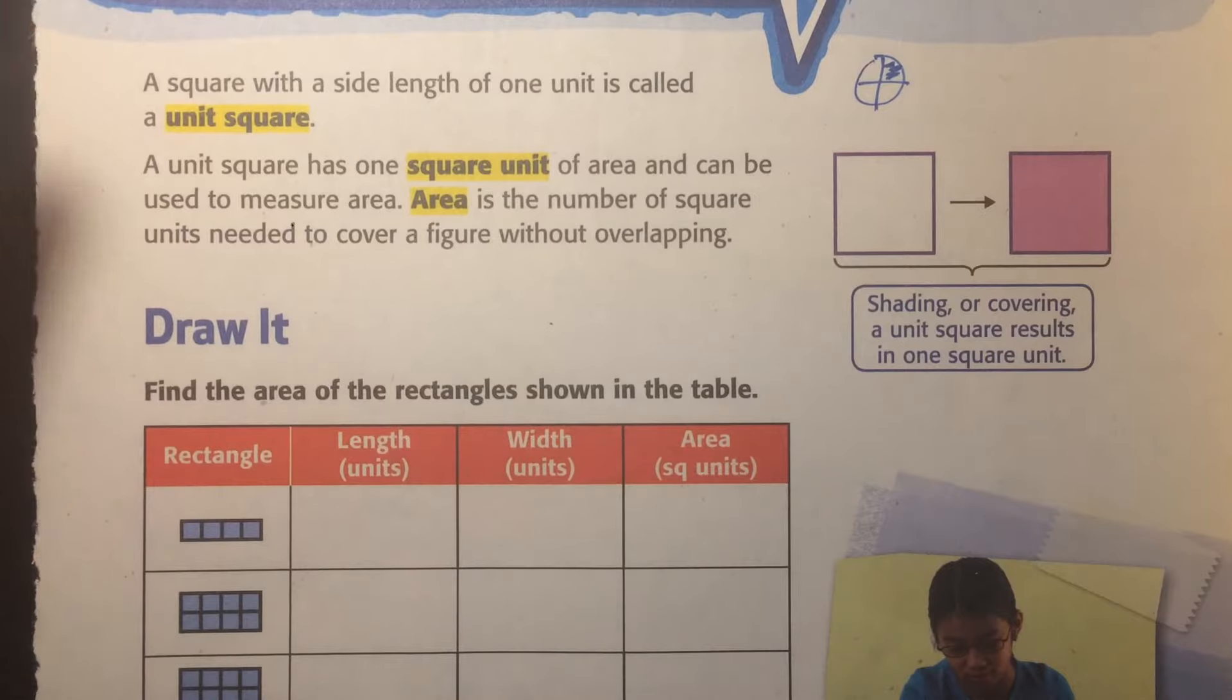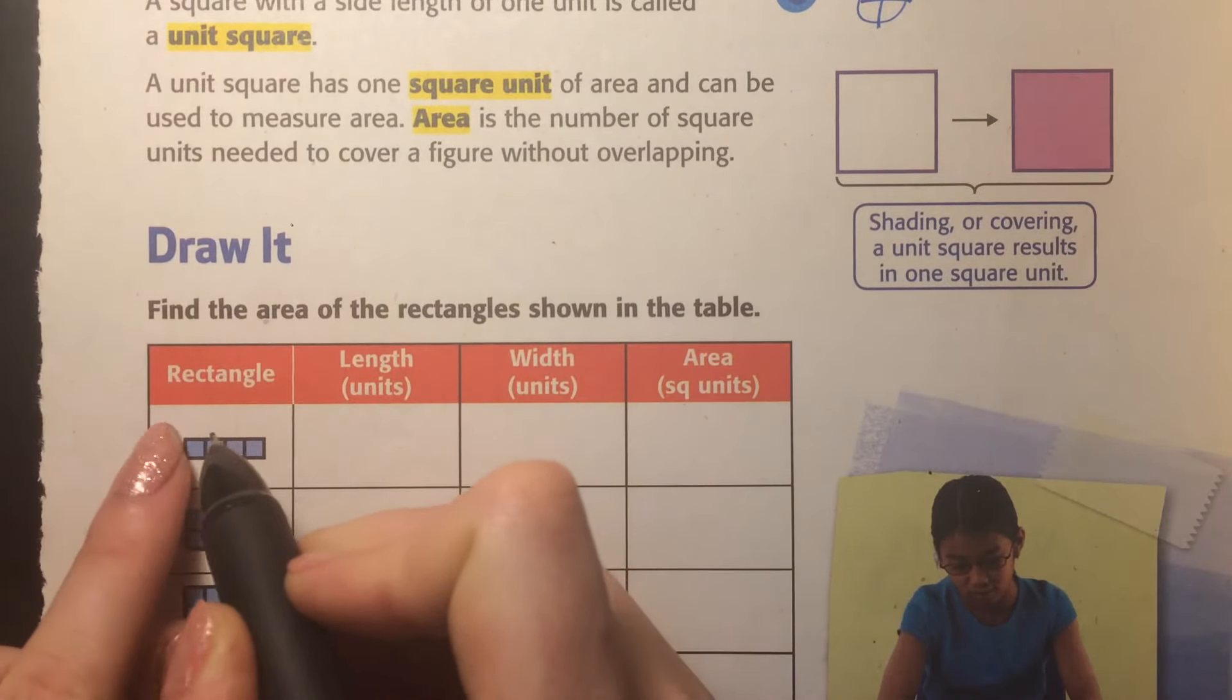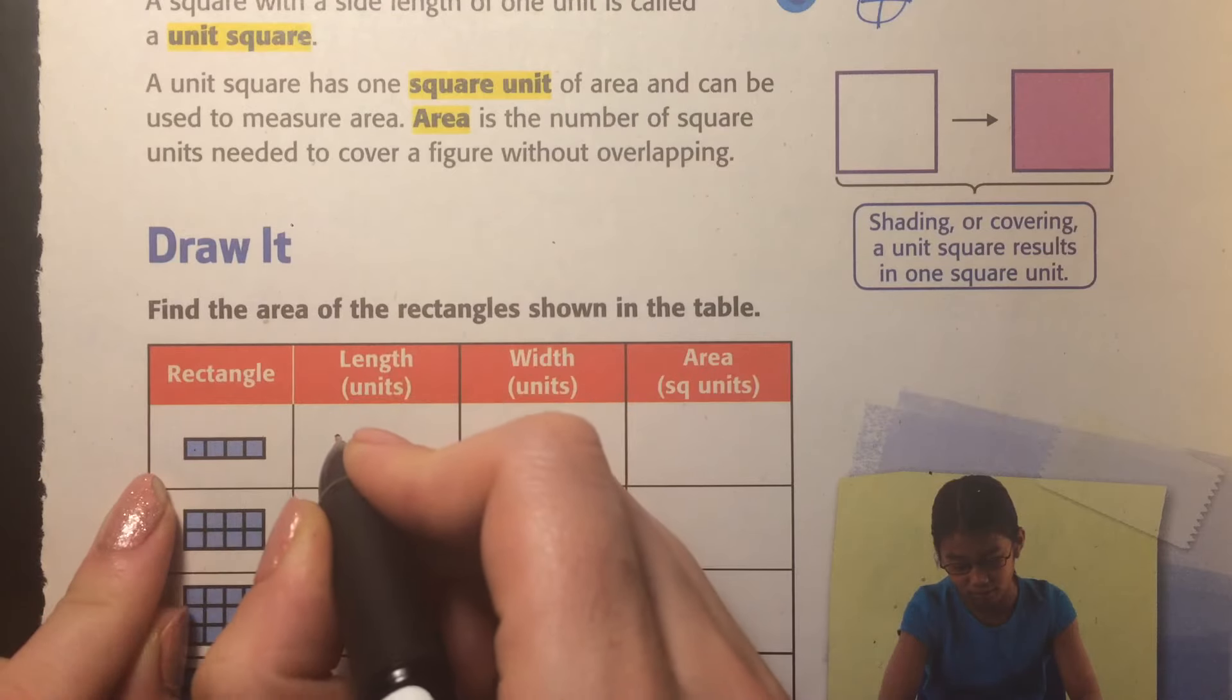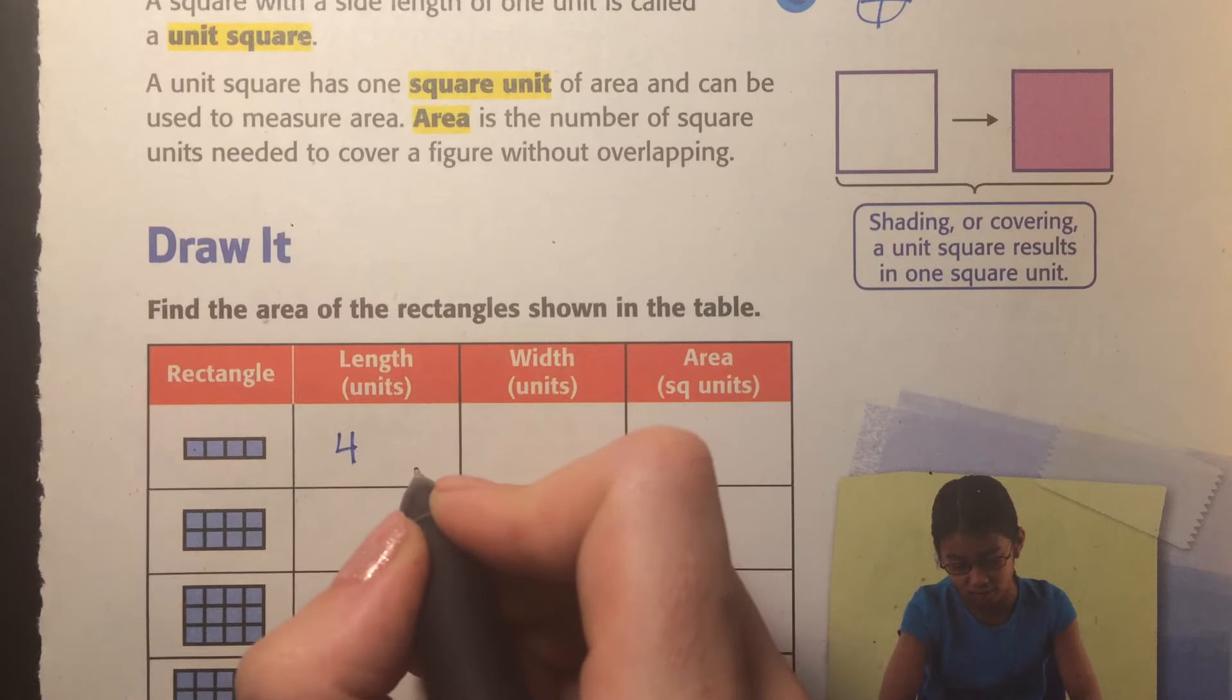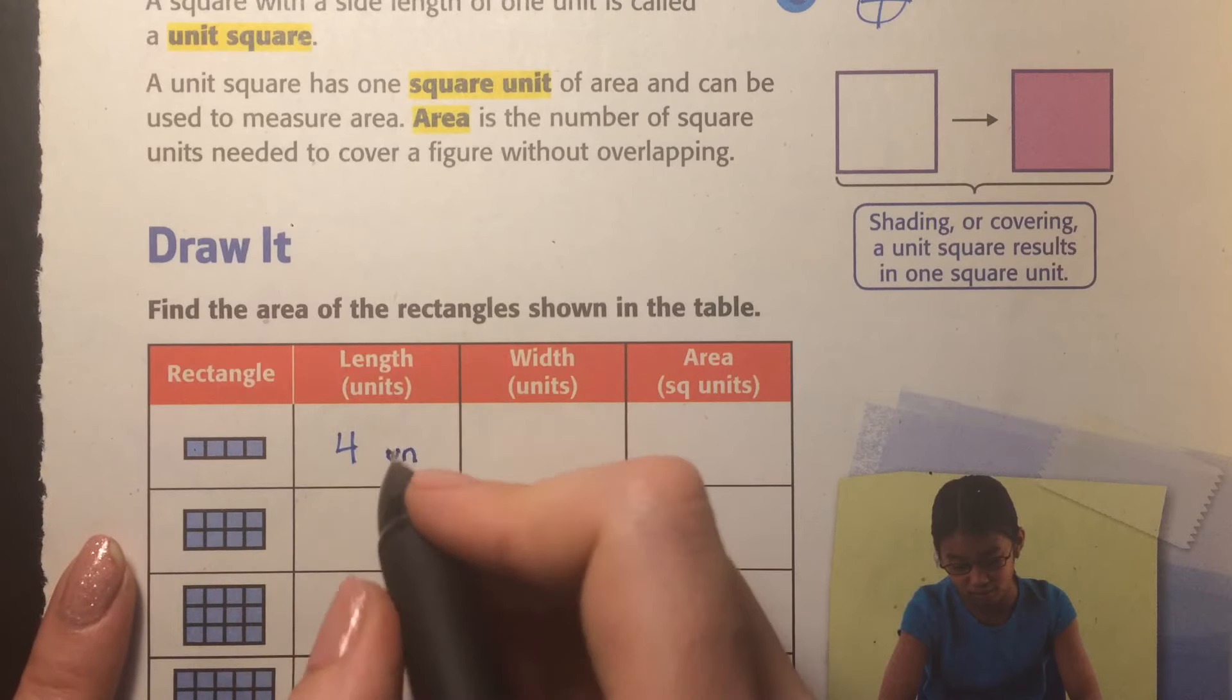So find the area of the rectangle shown in the table. Let's do length first. One, two, three, four. So the length is four units. Now we don't know if this is inches or centimeters or squares, so we're just going to put un for units.